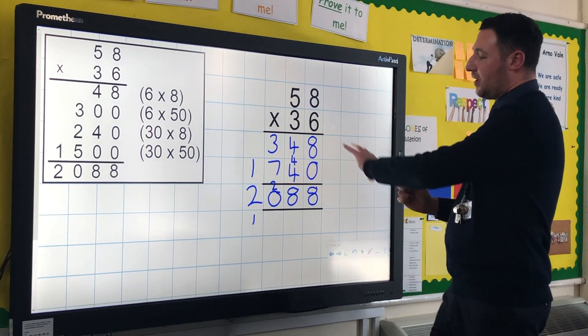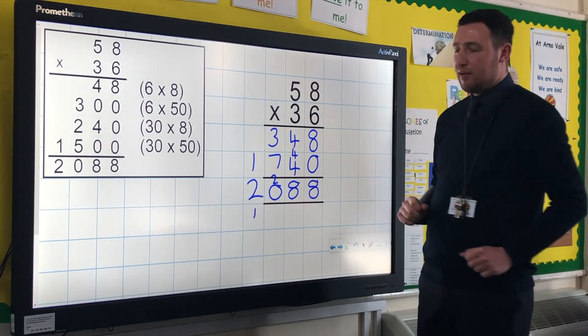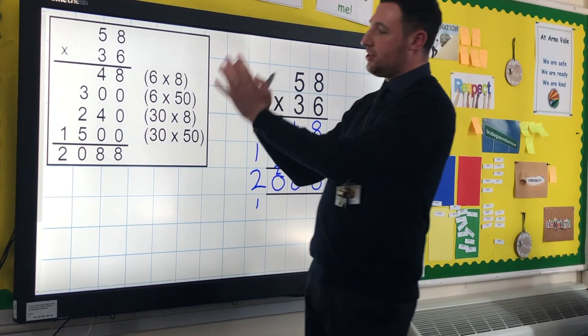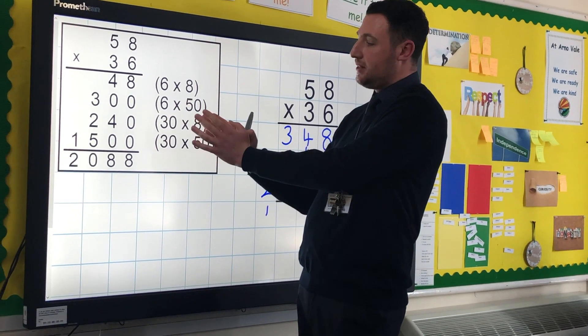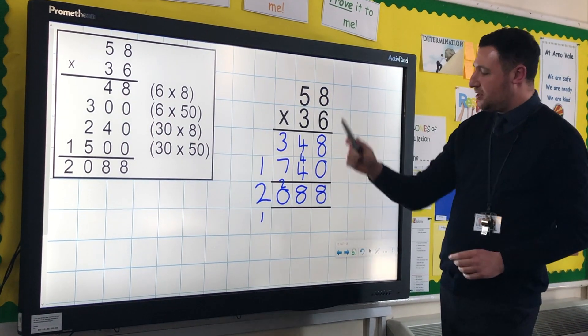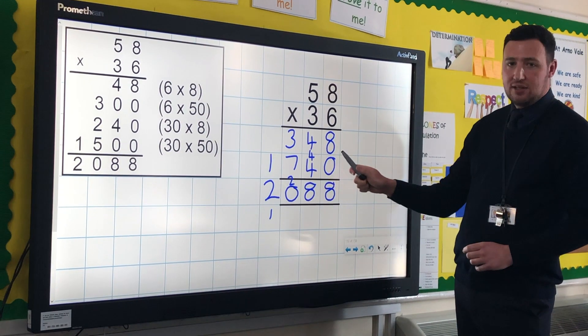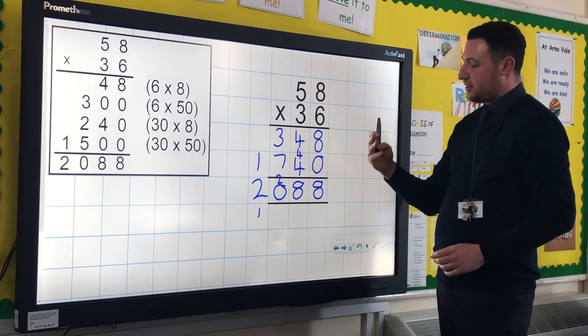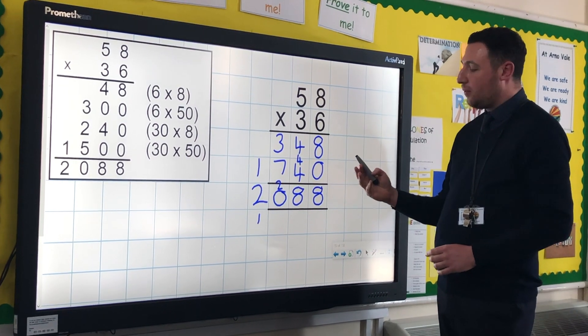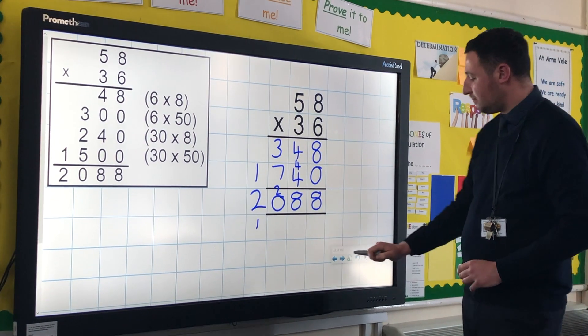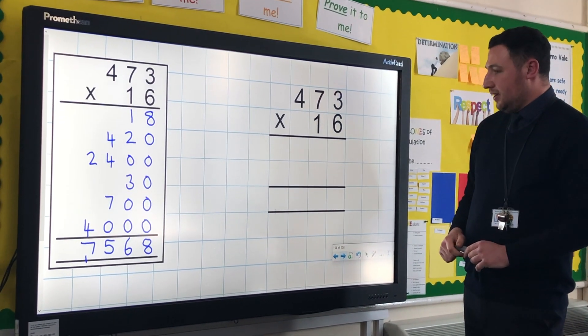2088, and what we've got now is a much more compact way of working this out. We would not move the children on to this until they're absolutely confident with this and can explain the how and the why. Just to reiterate, this is quite key to children's understanding. It's not just about getting the right answer, it's about understanding how it works and why it works so they can apply it to other situations as they go forward.